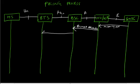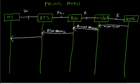The BSC sends a BTSM — base transceiver station management — paging command to the BTS. The BSS MAP paging message contains the IMSI or TMSI of the mobile and the cell identifier list. The BTSM paging command sent from BSC to BTS contains the channel number on the Um interface and also the TMSI of the mobile. Once the BTS receives that message, it sends a RIL3RR paging request message on the paging channel to all mobiles.